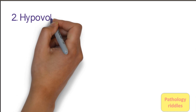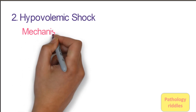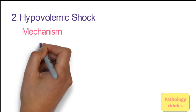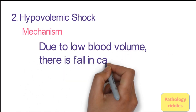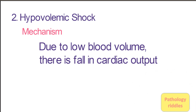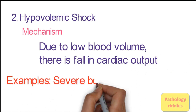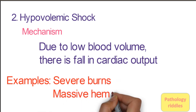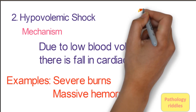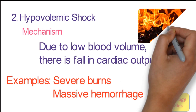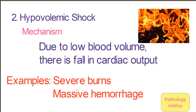The second type is hypovolemic shock. The word hypovolemic tells you there is less volume. The mechanism is that there is low blood volume and hence decreased cardiac output. Conditions causing low blood volume include severe burns, where fluid is lost, and road traffic accidents with massive hemorrhage. In both cases, decreased effective circulating blood volume leads to decreased cardiac output and shock.